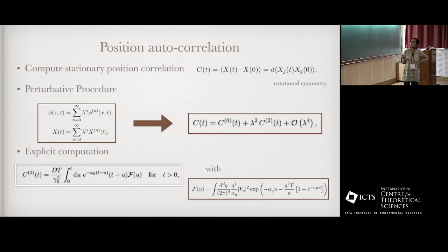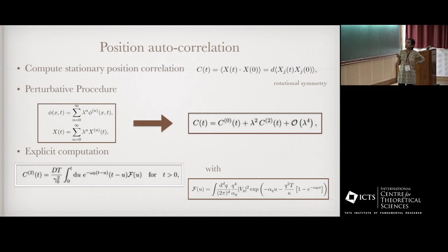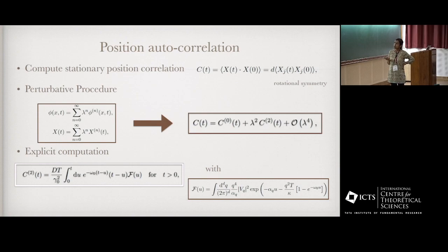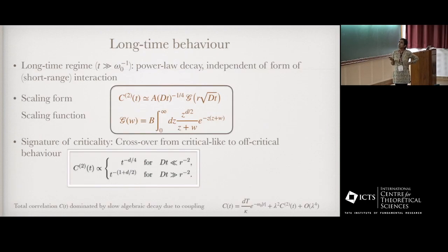To see that, we compute the position autocorrelation — ⟨x(t)x(0)⟩ — in the equilibrium state. We cannot do it exactly, so we proceed perturbatively: both the field and the position are expanded around the decoupled situation in a series of λ. It turns out the leading-order correction from the coupling is of order λ². This correction C₂(t) can be calculated and expressed exactly as an integral depending on a function F(u), which in turn depends on the trap strength ω₀ and the interaction potential.